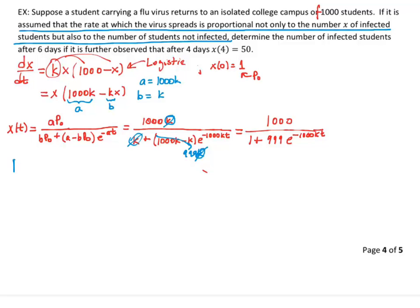We find k using our other condition, which our other condition was stated up here, right there. x of 4 is 50, using x of 4 equals 50. Okay, so, what do we have? We have 50 equals 1,000 divided by 1 plus 999 e to the, plugging in 4, I'm going to plug in 4 right here. And that's going to give me a negative 4,000 k.